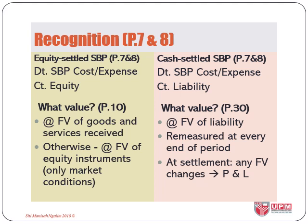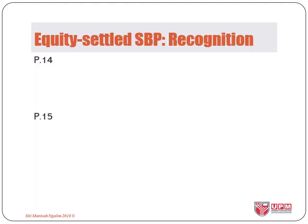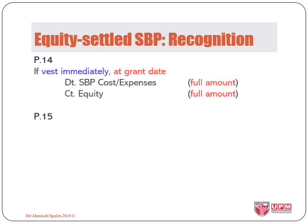If there are any changes to the value, we shall recognise the change in profit and loss as SBP expense. Specific to equity-settled SBP transactions, if the scheme vested immediately, for example, if an entity is rewarding its employees for their past performance and their performance has already been achieved at grant date, we shall debit SBP costs or expense and credit equity with the full amount of the value of the award.